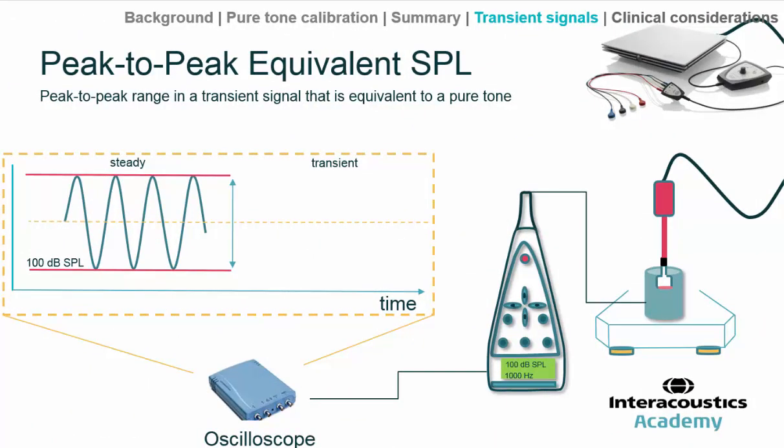If we can't measure directly, what alternatives do we have? The most common alternative is known as the peak-to-peak equivalent sound pressure level. We take a stable stimulus that can be measured accurately in the sound level meter — for example, a 1 kHz pure tone played into an insert phone using the 2cc coupler — measure it, and here we have 100 dB SPL. We then take the AC output from the sound level meter, capture it via an oscilloscope, and visualize the peak-to-peak voltage of the waveform.